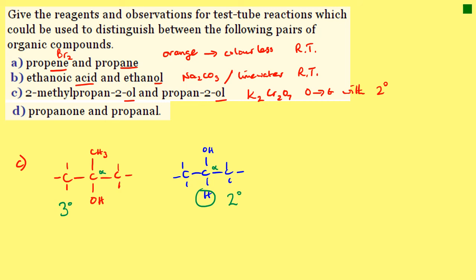Part D: we've got a ketone and an aldehyde — we can tell from the endings. To distinguish between an aldehyde and a ketone, we use Tollens reagent. We'll get a silver mirror with the aldehyde, and nothing with the ketone.